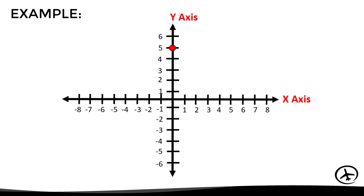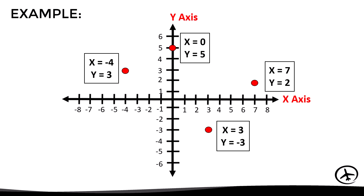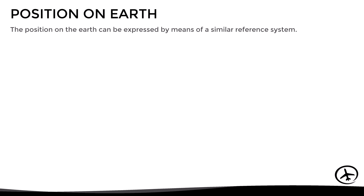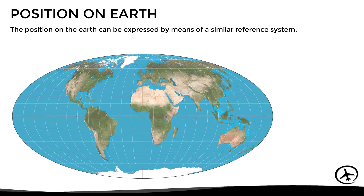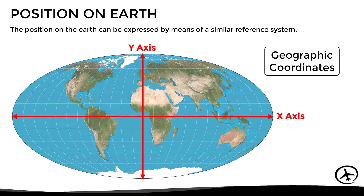Using these axes as reference, we can accurately and unambiguously express the position of any point within the scale. However, an important limitation is that this Cartesian system only works on a two-dimensional surface, so it cannot be correctly applied to the earth since it is a three-dimensional sphere. Despite this, the system used on earth is quite similar, as it uses two axes as reference and is known as the geographic coordinate system.